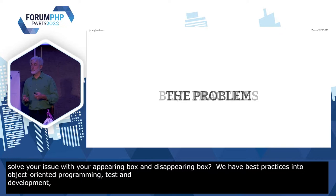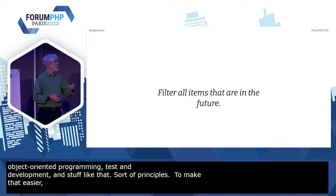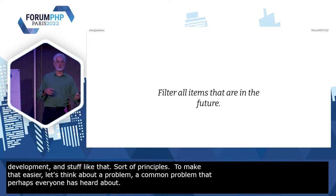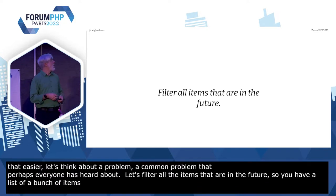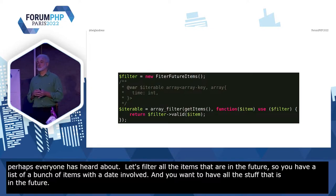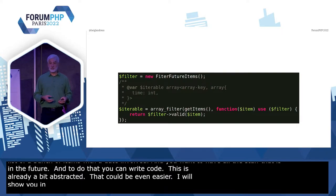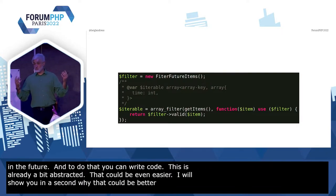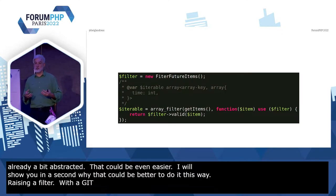To make that easier, let's think about a problem — a common problem that perhaps everyone has heard about. Let's just filter all the items that are in the future. So you have a list of a bunch of items with the date involved, and you just want to have all the stuff that is in the future.